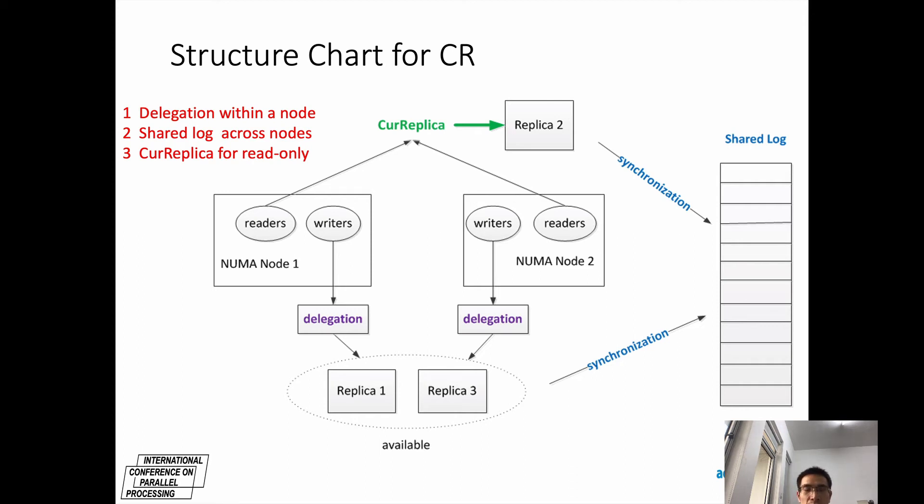In summary, it has three steps. The first is delegation within a node. The second is a shared log across nodes. The third is CR-replica for read-only access.